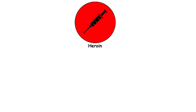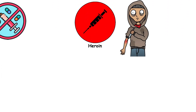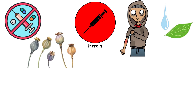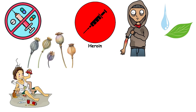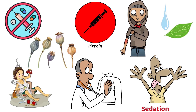Heroin is an illegal opioid drug synthesized from morphine, a natural substance extracted from the seed pod of certain varieties of poppy plants. It is highly addictive and can cause profound euphoria, sedation, and respiratory depression.